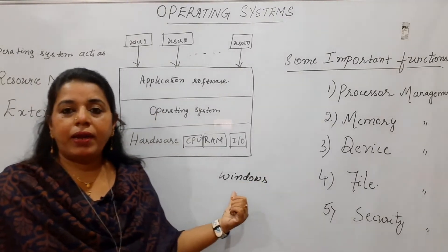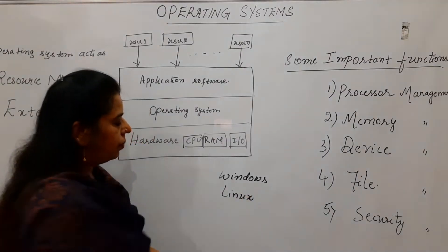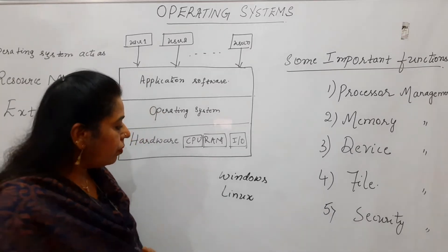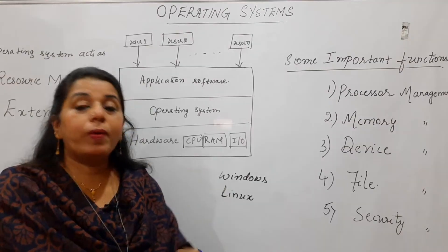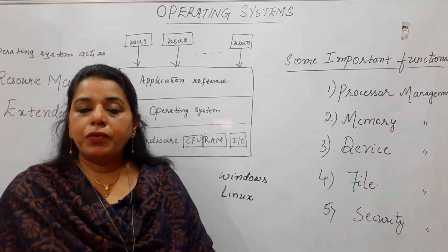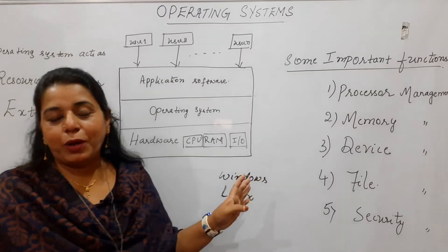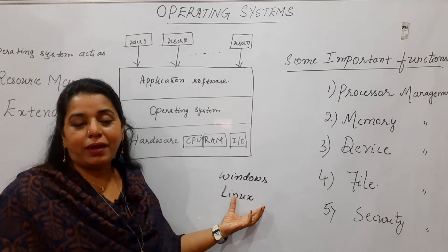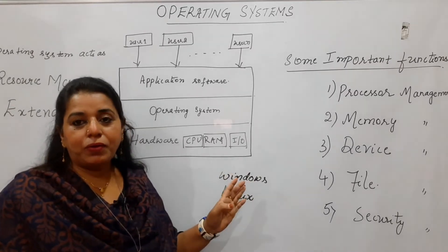Similarly, we have the Linux operating system, which is a command-based operating system. Whether it is command-based or a graphical user interface, let us see the performance. Basically, why we go for a particular operating system depends on the requirement. Few applications require maximum throughput; others require only convenience. Depending on the requirement, you choose the operating system. For convenience and user-friendliness, we go for Windows. But Linux gives very good throughput — the performance is better if you use Linux.